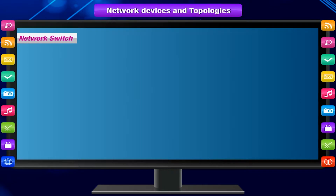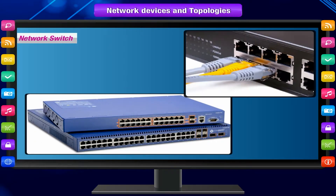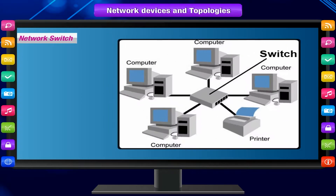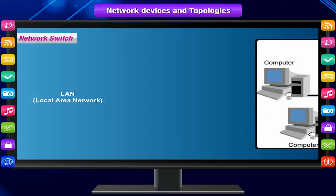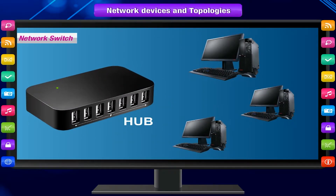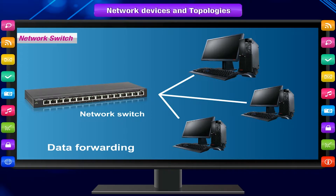A network switch, like a hub, also works at the layer of LAN — local area network — but it is more intelligent than a hub. While a hub just does data forwarding, a switch does filtering and forwarding, which is a more intelligent way of dealing with data packets.